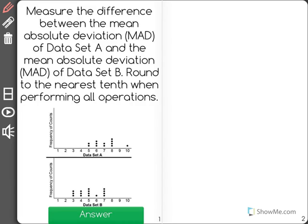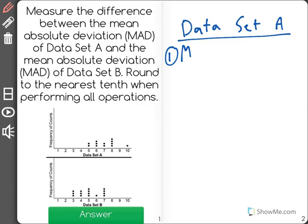So first we need to find the mean absolute deviation of data set A. And if you remember when we're finding the MAD, the first thing that you need to do is find the mean of the data set.